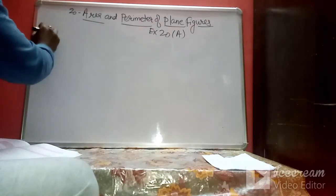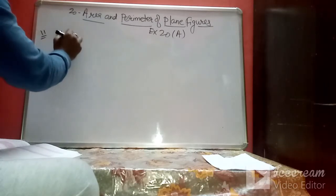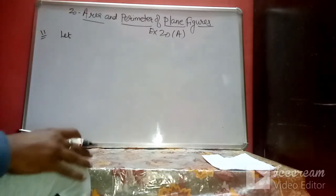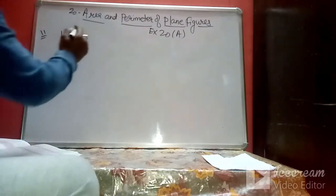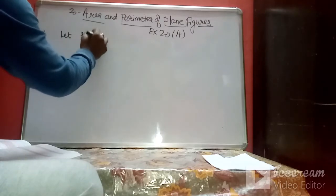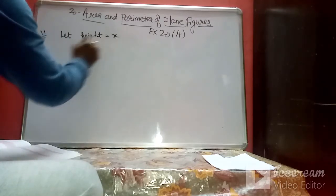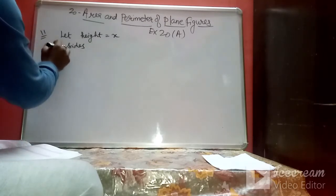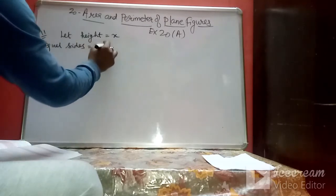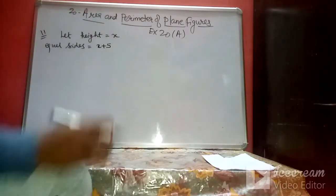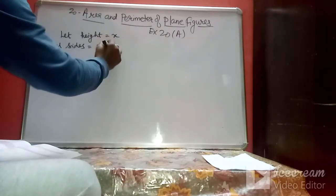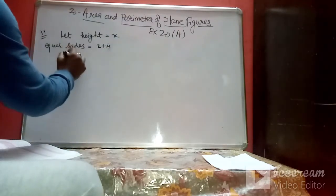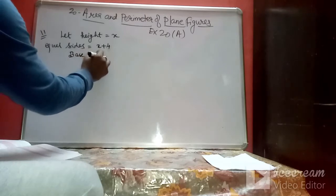In question number 11, it is given that each of the equal sides of an isosceles triangle is 4 cm greater than its height. Let height equal x, so the equal sides become x + 4. The base is given as 24 cm.